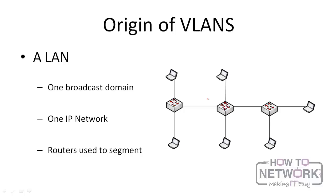To look at the origin of VLANs, we have to first look at what LANs are. A LAN is what is called a local area network. An example of a local area network is what we have here. In this network, we have three switches and we have computers connected across the three switches.